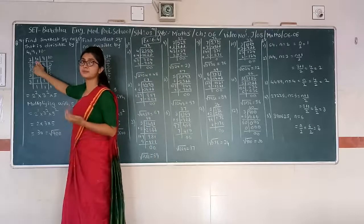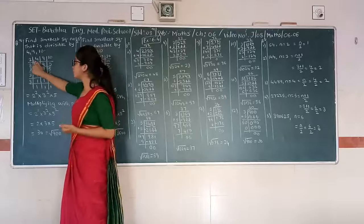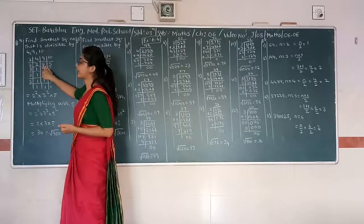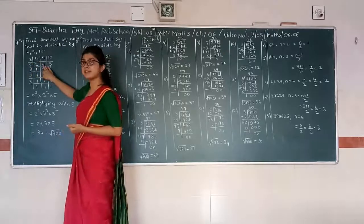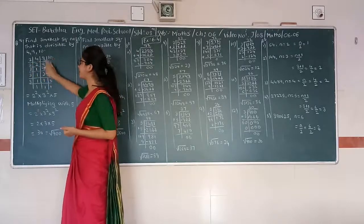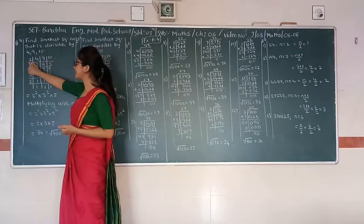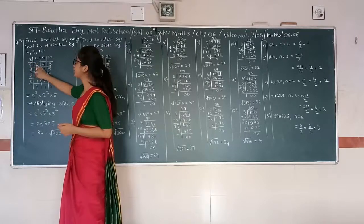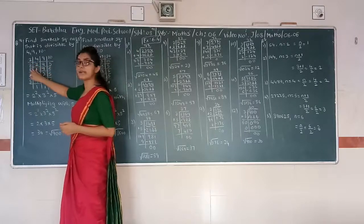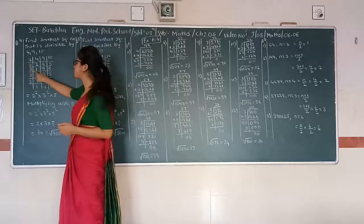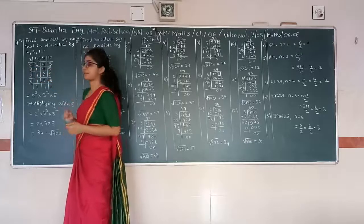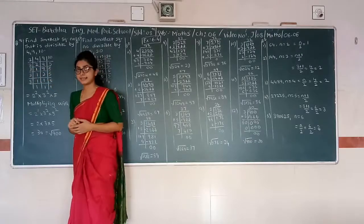4 is divisible by 2. Therefore, 2 gives 4. Then 2 is divisible by 2. Therefore, 2 times 2. 9 and 5 will remain as they are.